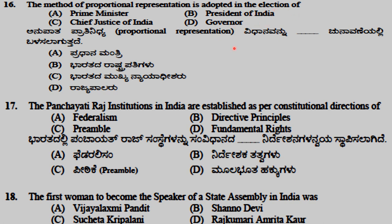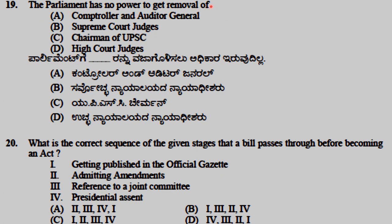The method of proportional representation is adopted in the election of the President of India. Panchayati Raj institutions in India are established as per the constitutional direction of directive principles. The first woman to become speaker of a state assembly in India was Shano Devi. Parliament has no power to get removal of the chairman of UPSC.